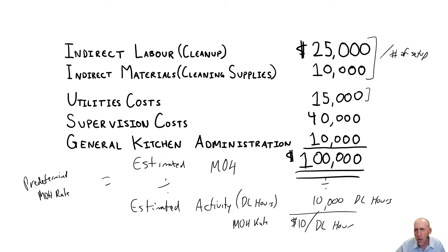Maybe utilities costs, that's based on our stoves and ovens being on. That's based on our machine usage. Maybe it would be better to divide by machine hours.